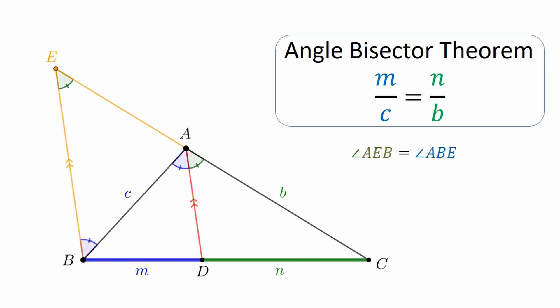But remember, the blue and green angles in the original angle A are equal because AD is an angle bisector. That means the blue and green angles at B and E are also equal. In other words, angle AEB equals angle ABE. And you know what that implies? That triangle AEB is isosceles. It follows that AE and AB are congruent. And since AB has length C, then AE also has length C.